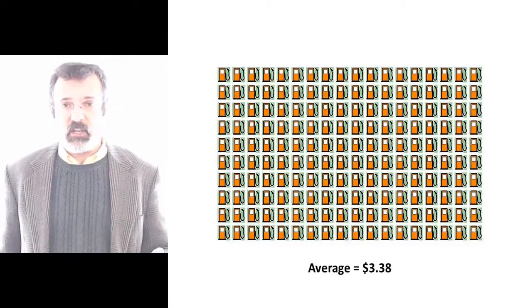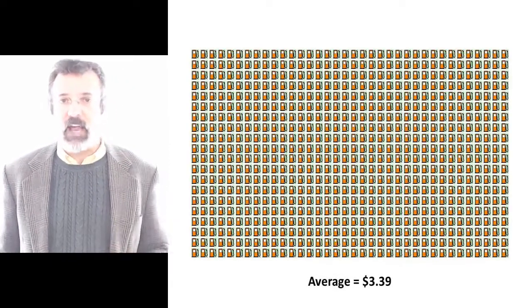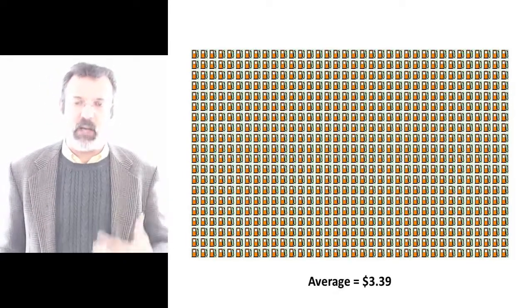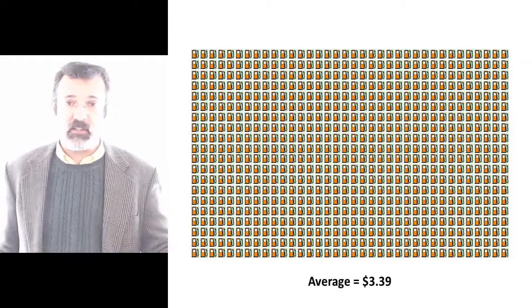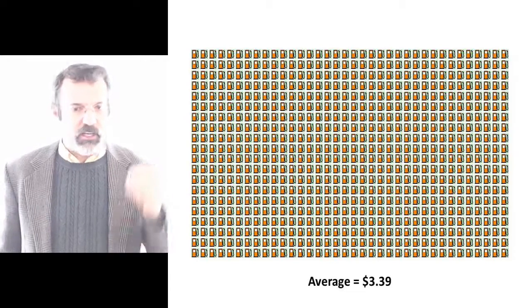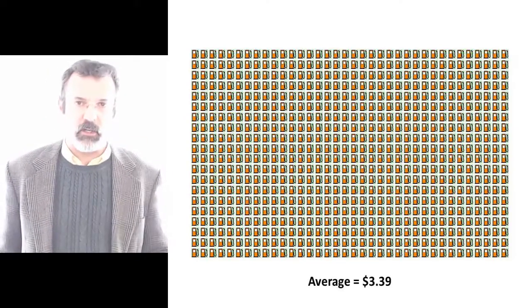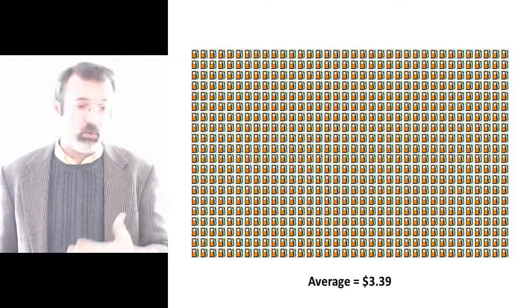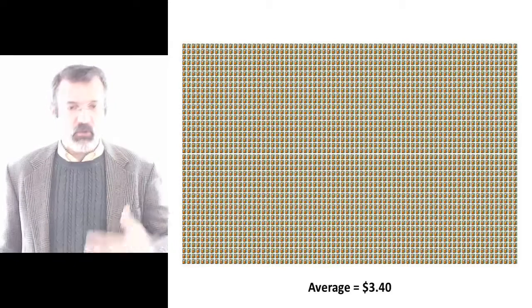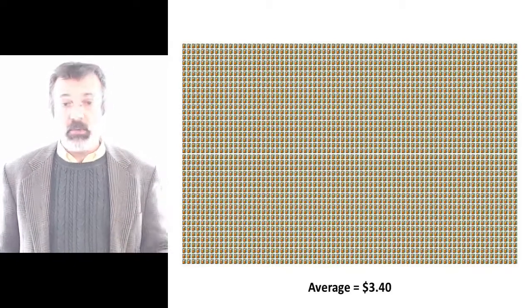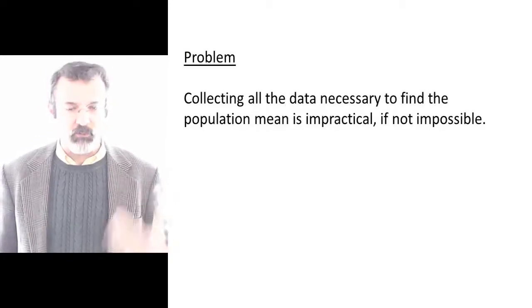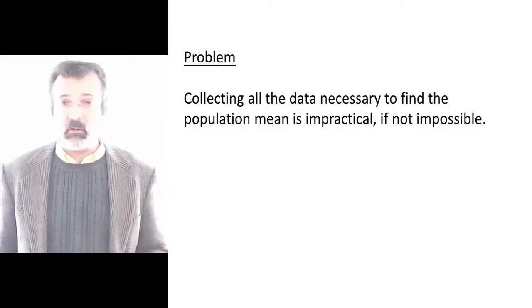So we go to every gas station throughout the entire state and find that the average price of gas is $3.39. And still this isn't the true average price of gas because there are other gas stations throughout the country that we haven't observed. So suppose we go to every neighborhood, in every city, in every state in the entire country and record the price of gas sold at all these gas stations. We find an average of $3.40 — this now is the true average price of gas throughout the country. But notice a problem: collecting the information to come up with this true average price of gas is impractical and often impossible.